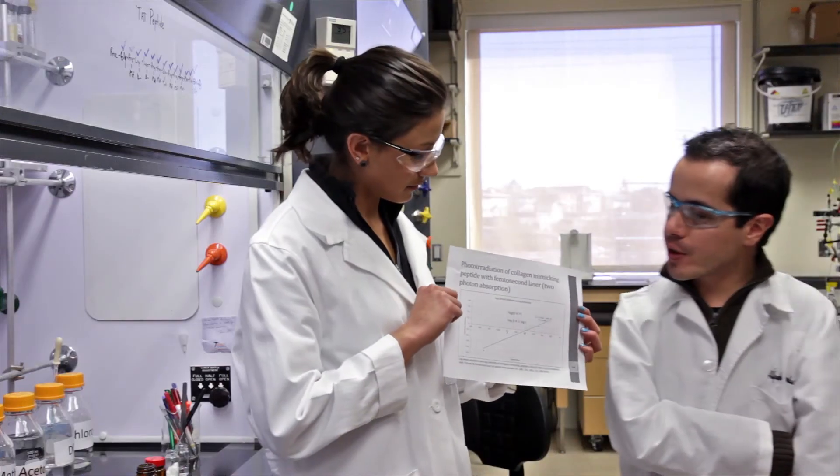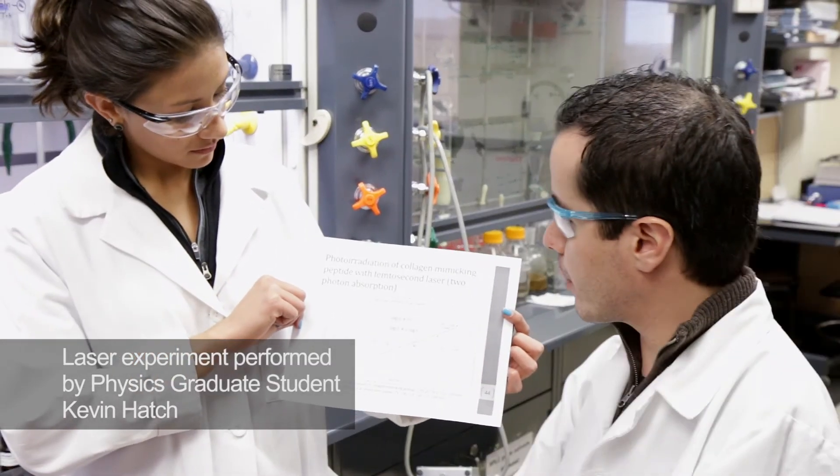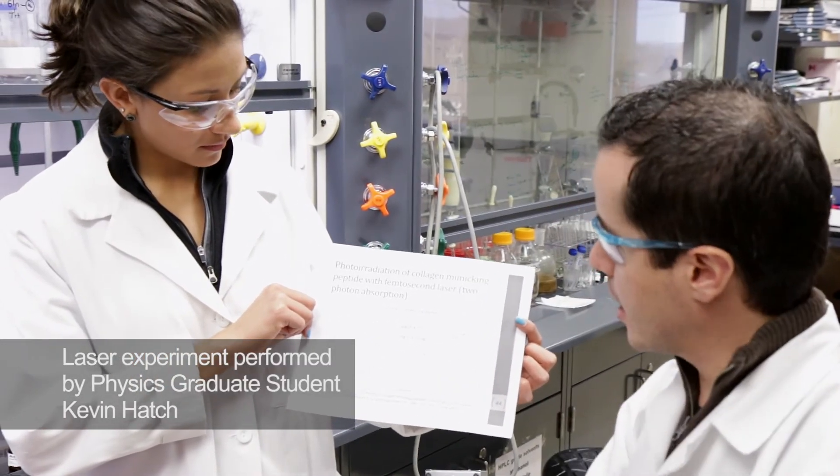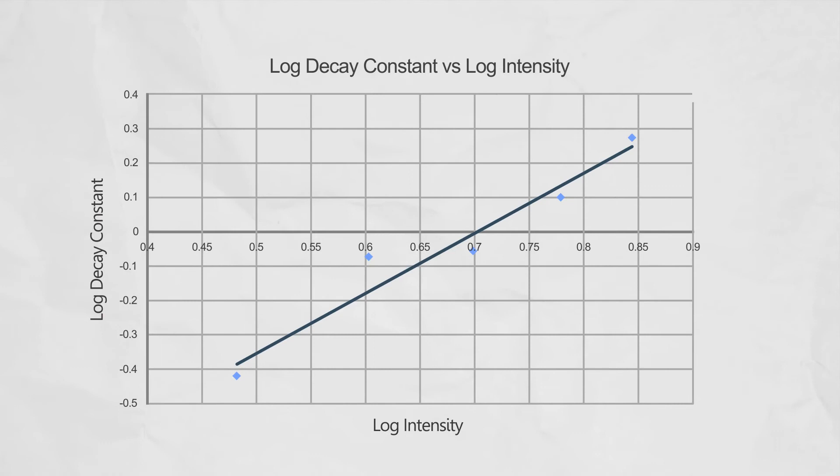After we received the results from our collaborators in physics, where they performed an experiment with our photoreactive collagen-mimicking peptide using a femtosecond laser, we obtained this graph where we plot the decay constant over the intensity of the laser. First of all, what we can see is that as the intensity of the laser increases, the decay constant, which is proportional to the rate constant, is increasing, which makes sense.